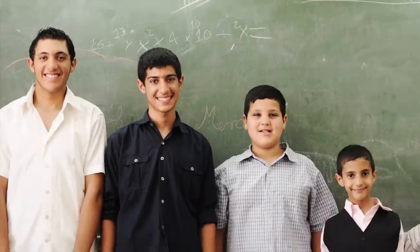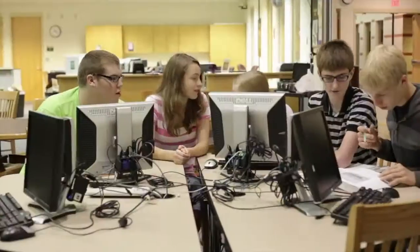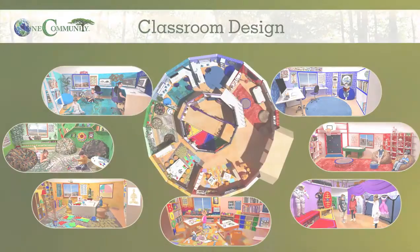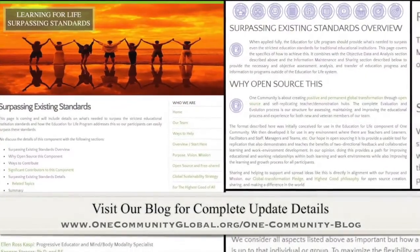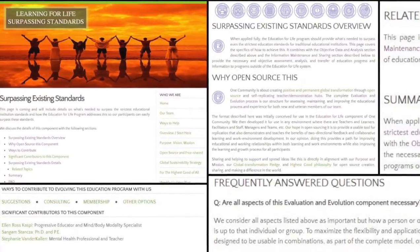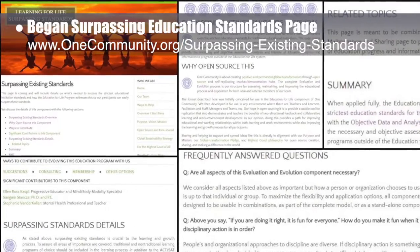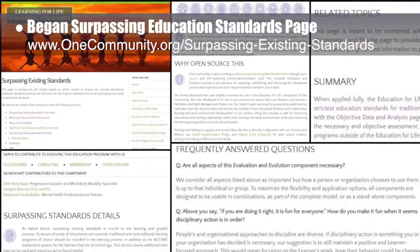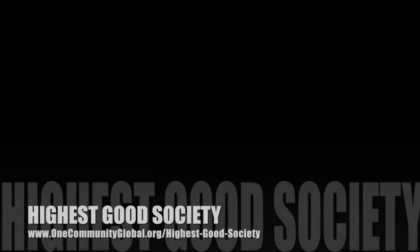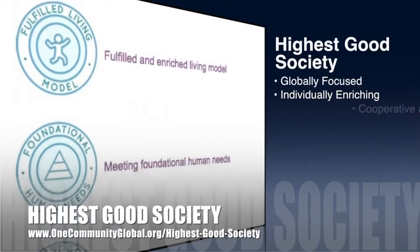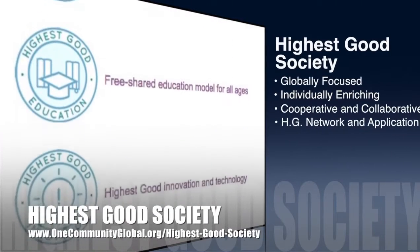One Community's approach to highest good education is designed for all age groups, adaptable to any schooling environment, inspiring and fun for all participants, and includes national standards, all-subjects lesson plans, teaching strategies, learning strategies and tools, classroom design, and more. This week the core team continued adding to the education evaluation and evolution process open source pages and tutorials, creating the formatting and beginning to enter content for the surpassing education standards page.